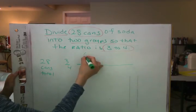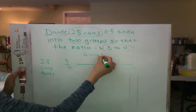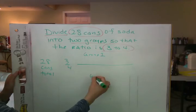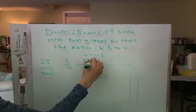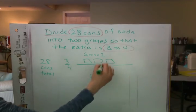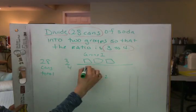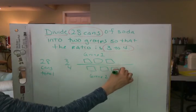So it's group 1 and group 2. How many boxes in group 1? There's going to be 3. Good. 1, 2, 3. What about in the second group? 4. 1, 2, 3, 4.